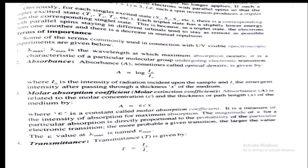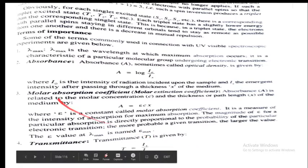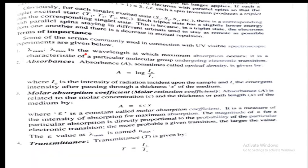Now let us discuss some terms we will always encounter in spectroscopy. The first term is lambda maximum. Lambda maximum is the wavelength at which maximum absorption occurs. It is characteristic of a particular molecular group undergoing electronic transition.